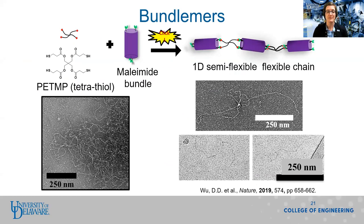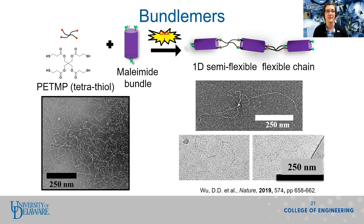Some researchers at UD are working with peptides to create an entirely new type of structure called bundlemers. Peptides are short chains of amino acids that are found in nature and are used in biological processes. However, bundlemers are created when the peptides are joined together in new ways not found in nature. By controlling which peptides are used and how the different peptides are attached to each other, the properties of the resulting bundlemer can be controlled. Bundlemers are yet another example of using natural structures and combining them in ways not found in nature to make new engineered materials with designer properties.